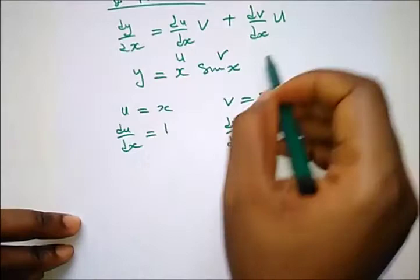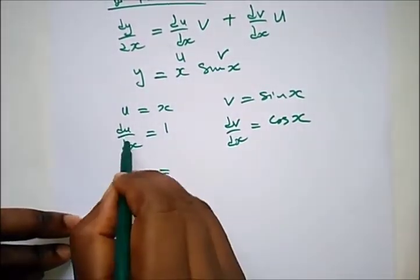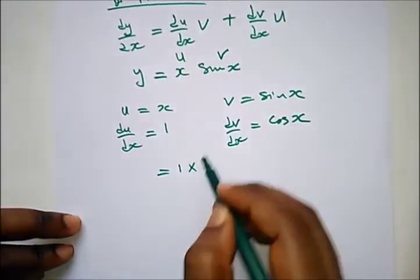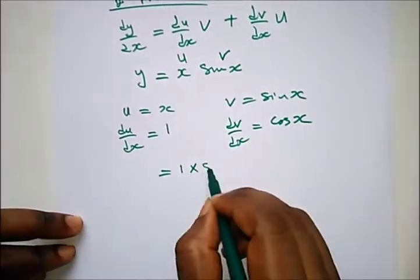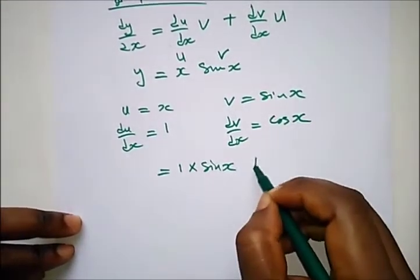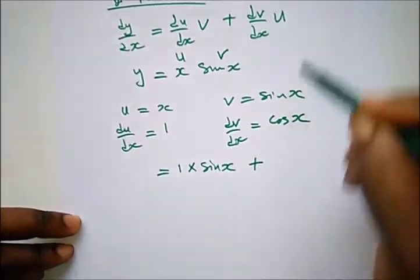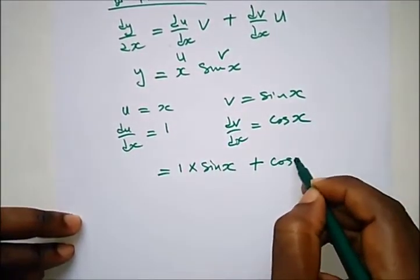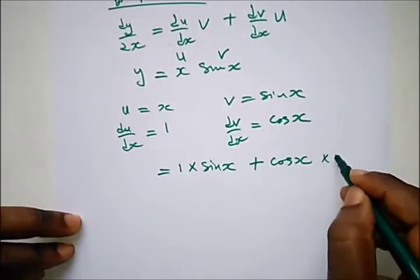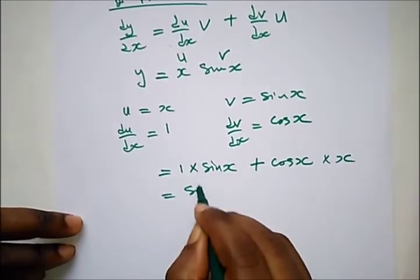We put this into the formula. du/dx is 1 multiplied by v, which is sin(x), plus dv/dx which is cos(x) multiplied by u which is x. So we have sin(x)